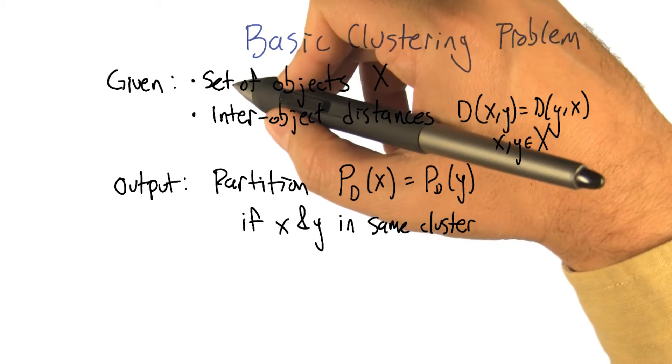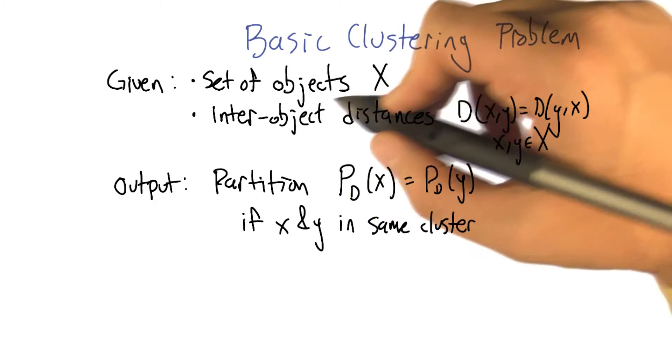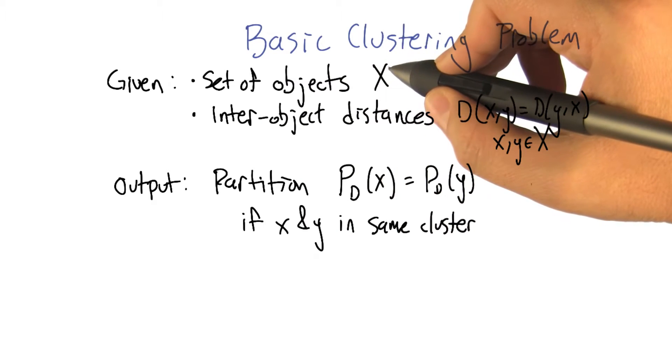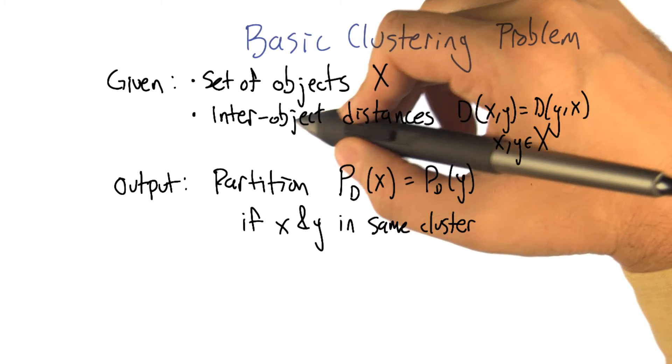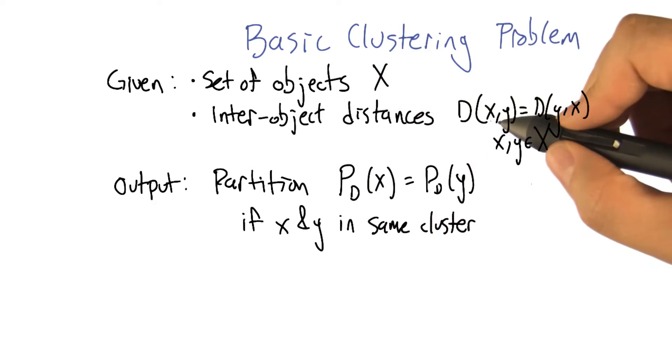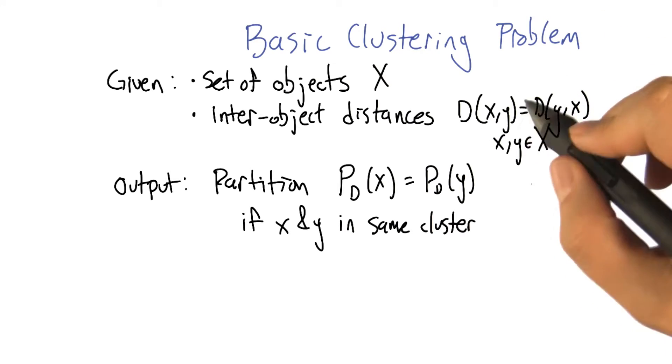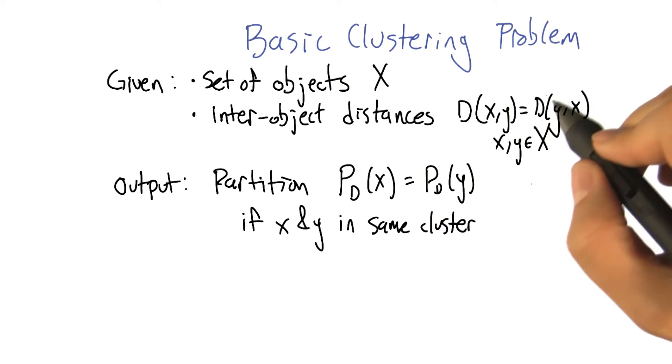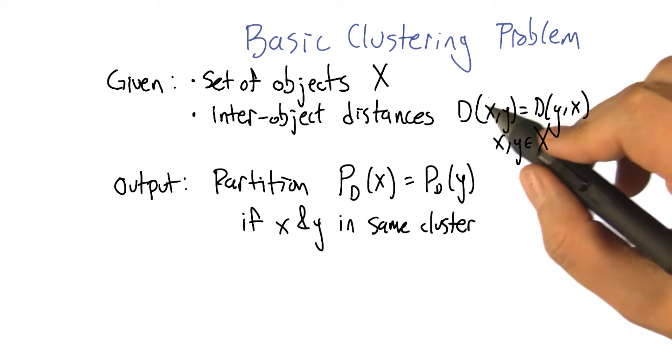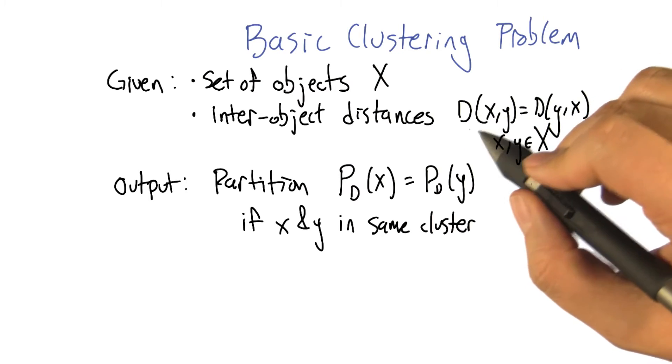Here's what we're going to assume. We're given some set of objects X, and information about how they relate to each other in the form of inter-object distances. For objects x and y in the set, we have dxy, which is the same as dyx, which says how far apart they are in some space. They don't actually have to be in some metric space - they just need to have this distance matrix d defined.